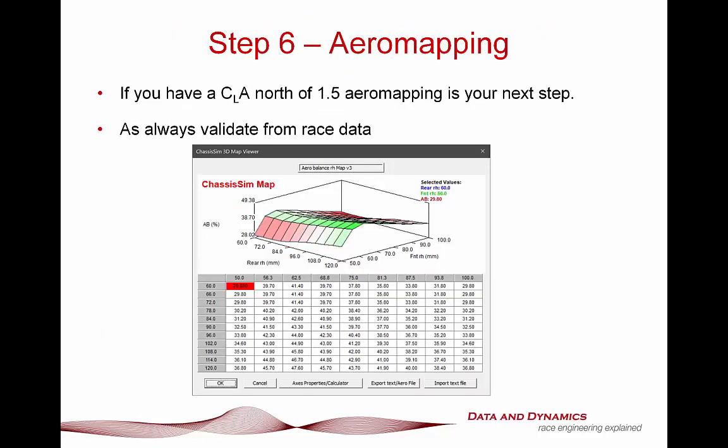Step six: aero mapping. If you've got a CLA north of 1.5 and your car mass is less than about 1,000 kilos, then doing your aero mapping is the next step. As always, validate from race data. I've talked about this in a number of aero modeling tutorials on the ChassisSim YouTube page and also in the boot camps. Always validate from race data — do not skip this step.